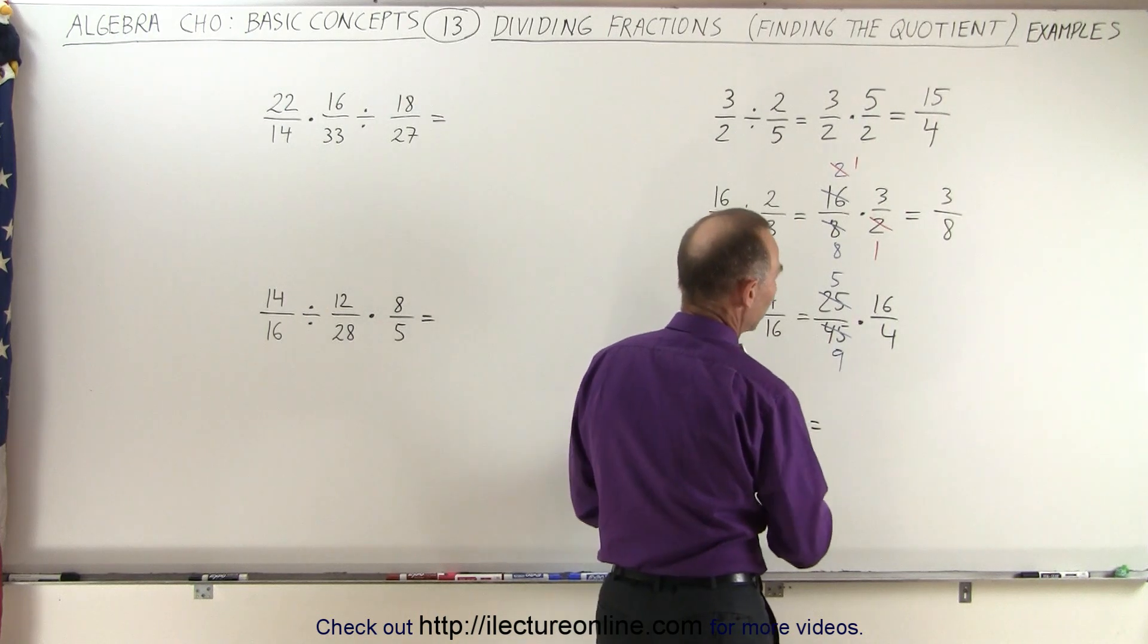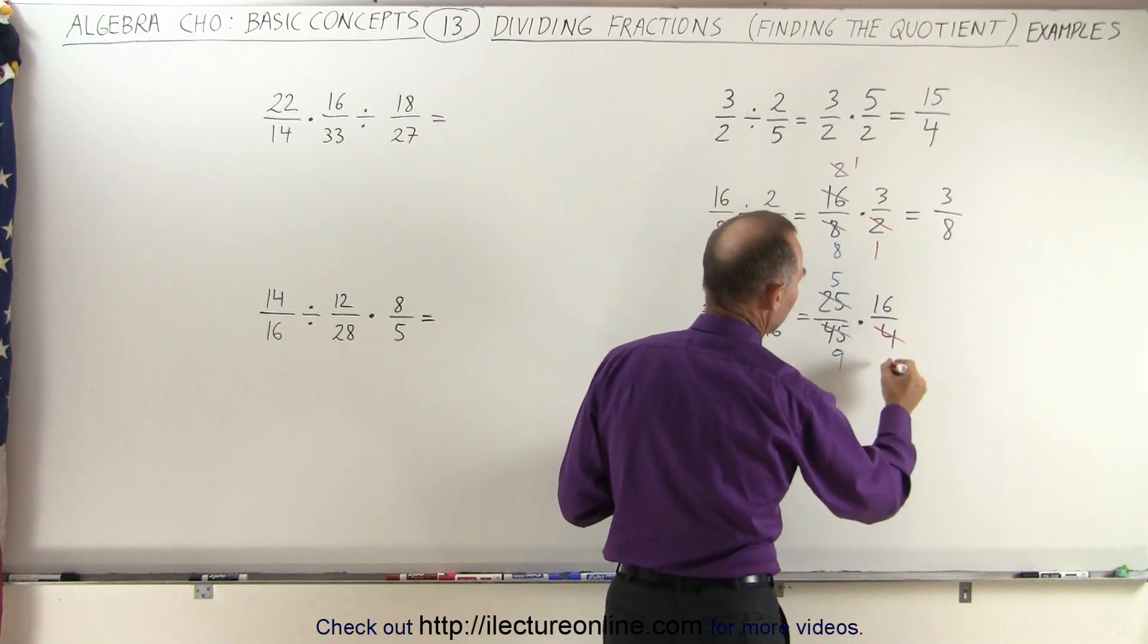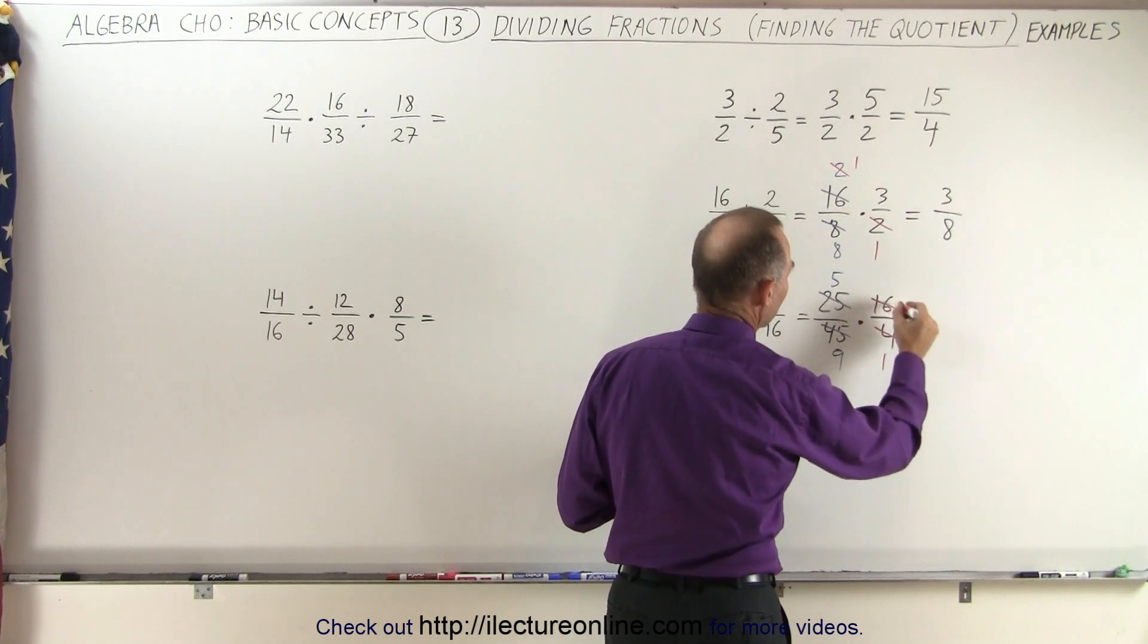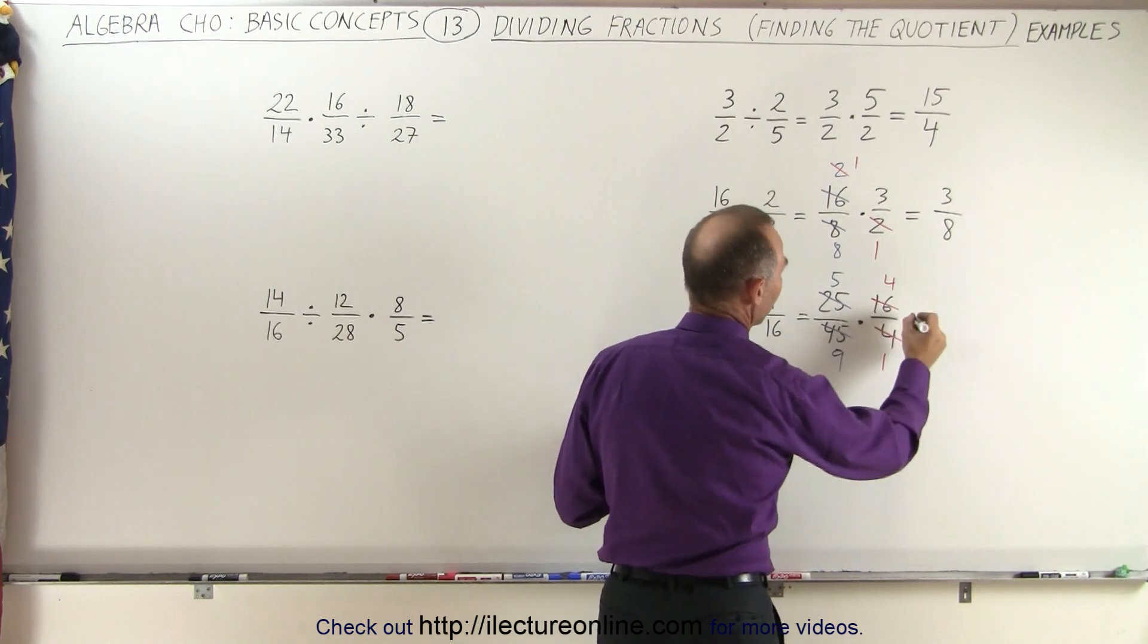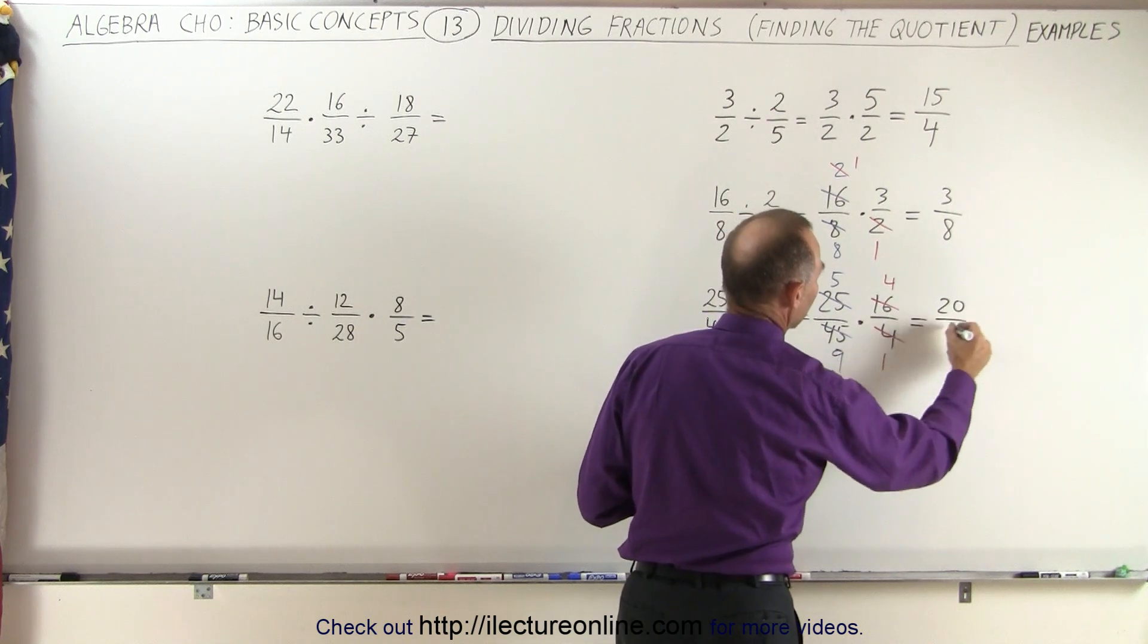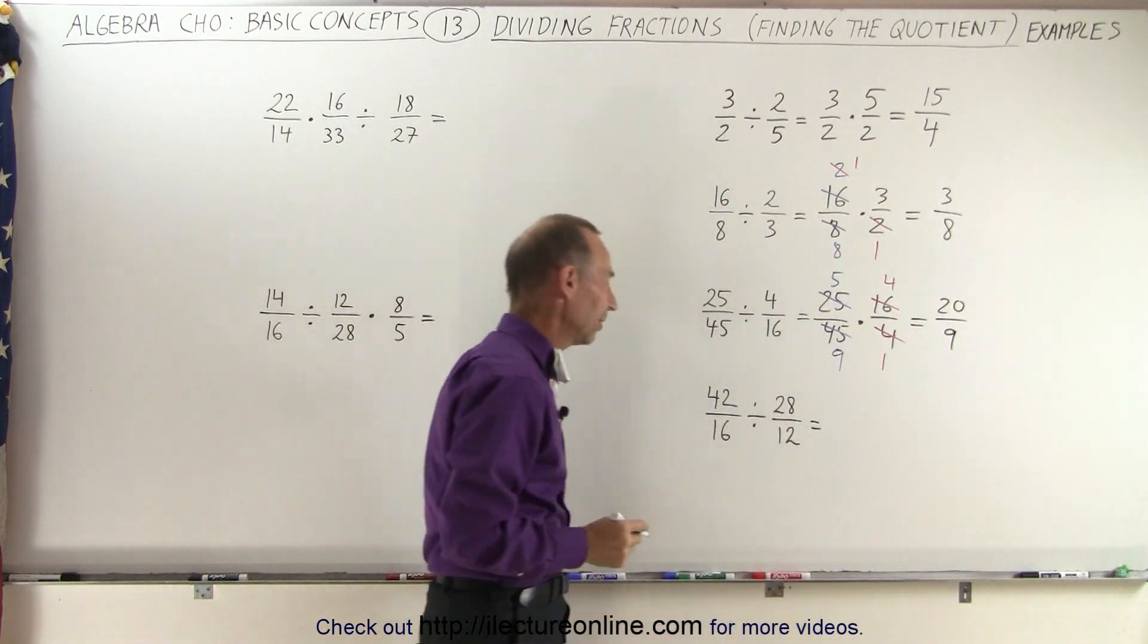And then the 4 and the 16, the same way, they're both divisible by 4, so 4 divided by 4, which is 1, 16 divided by 4, which is 4, and now we can simply multiply those out. 5 times 4 is 20, 9 times 1 is 9, and that's the final answer.